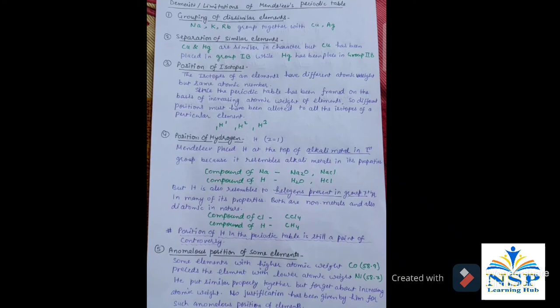But some property of Hydrogen is also resembled with Halogen, which are present in group 7A. In many of its properties, both are non-metals and also diatomic in nature. For example, compound of Chlorine is CCl4. Similarly, the compound of Hydrogen is CH4.